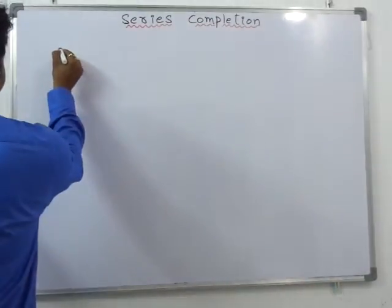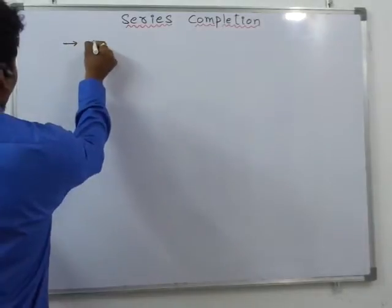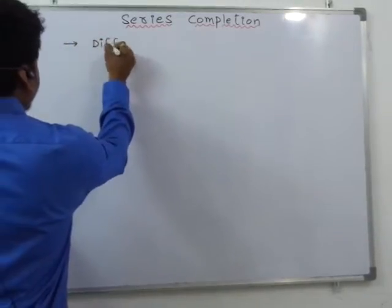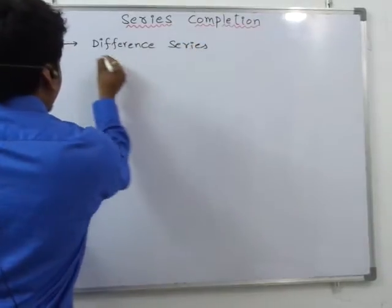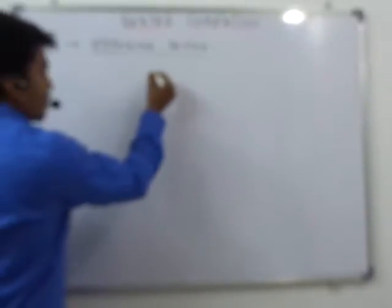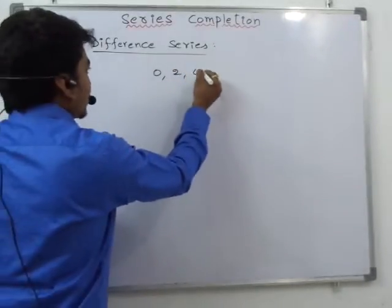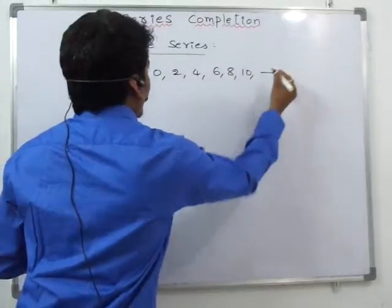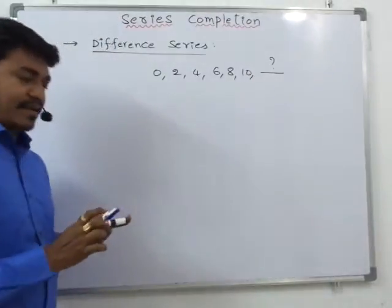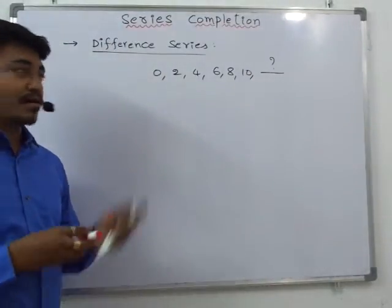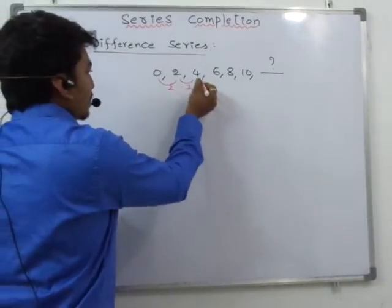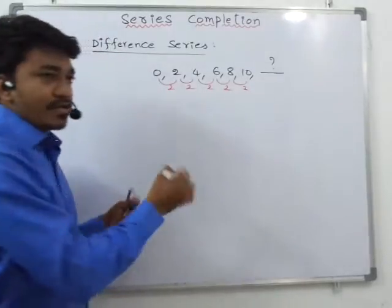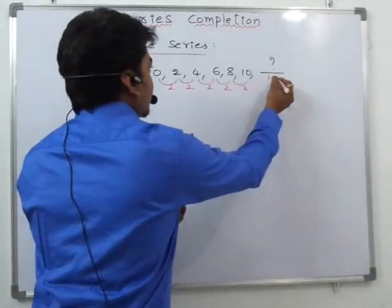Most number series questions will be based on different series. For example, if you have a series 0, 2, 4, 8, 10 — what is the next number? The difference is 2 each time, so the next number is 12. This is a simple example of a difference series.